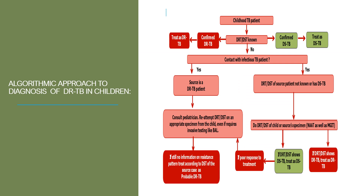The algorithm approach to diagnosis of drug-resistant TB in childhood TB patients begins by confirming whether it is drug-sensitive or drug-resistant TB. If there is contact with a known DR-TB patient, it is treated as drug-resistant tuberculosis. If there is still no information on resistance, examine the source case. If the source patient has drug-sensitive tuberculosis, perform drug sensitivity testing of the source; if there is poor response to treatment, consult a pediatrician.